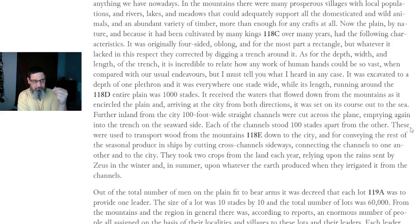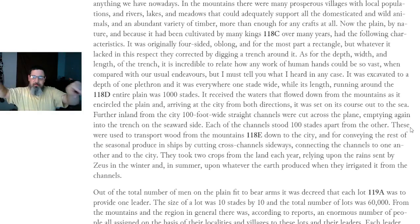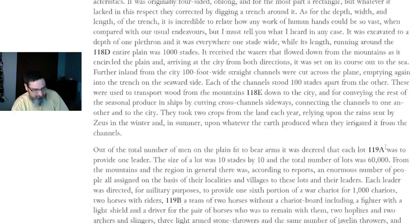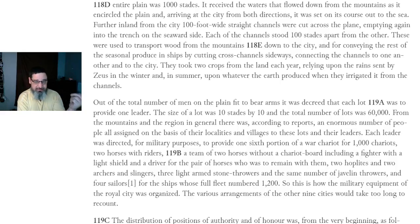The trench received the waters that flowed down from the mountains, circling the plain and arriving at the city from both directions before going out to sea. Further inland from the city, 100-foot-wide straight channels were cut across the plain, emptying into the trench on the seaward side. Each of the channels stood 1,000 stades apart from each other, and these were used to transport wood from the mountains down to the city and for conveying the rest of the seasonal produce in ships by cutting cross-channels sideways and connecting the channels to one another.